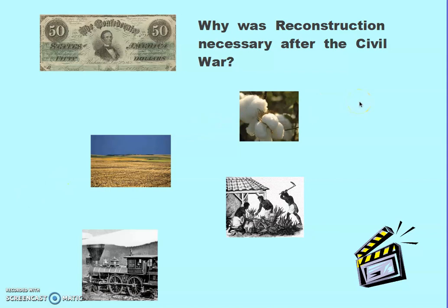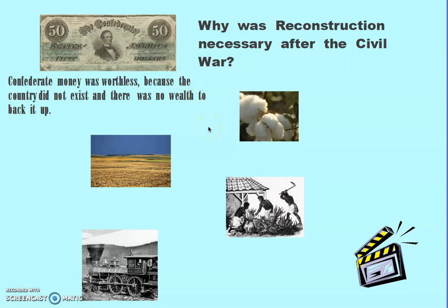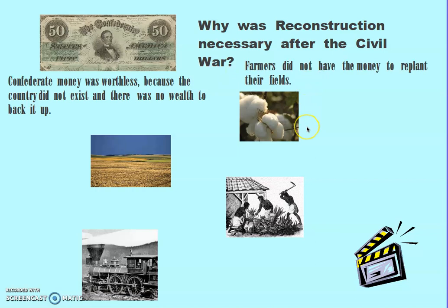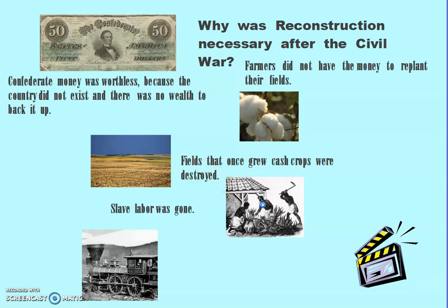Why was Reconstruction necessary after the Civil War? Confederate money was worthless because the Confederacy no longer existed, so there was no wealth to back it up — any money anybody had was worth zero. Farmers did not have the money to replant their fields. The fields and plantations were mostly destroyed during the Civil War because many battles were fought in the South, and General Sherman marched through and burned everything down to finish the war. The fields that once grew cash crops were destroyed, and plantation owners lost their money, slaves, and cash crops. Slave labor was also gone.